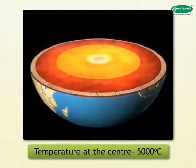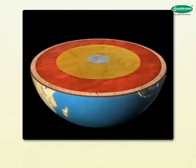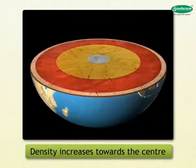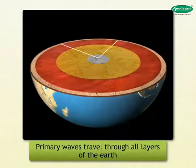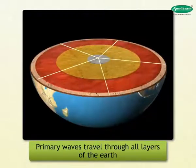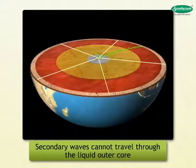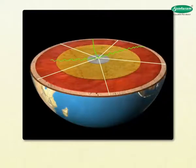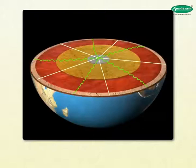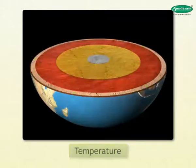This means that though the surface is cool, the core is very hot. The temperature at the center of the Earth is estimated to be 5,000 degrees centigrade. Secondly, the density of the material increases towards the center. Thirdly, the primary waves of an earthquake can travel through all the layers of the Earth, while traveling through the core their direction changes. The secondary waves cannot travel through the liquid outer core.